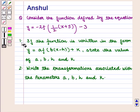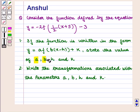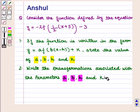The first part of the question says: if the function is written in the form y is equal to a into f of b into x minus h, the whole, plus k, state the values of a, b, h, and k. The second part says: write the transformations associated with the parameters a, b, h, and k.